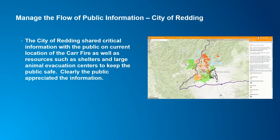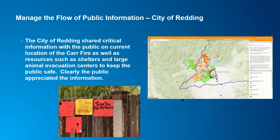One of my favorite examples from a public information perspective is from the city of Reading — from the Carr Fire a couple of weeks ago. It really represents a typical public information sharing pattern: sharing with the public where the fire is, where the evacuation zones are, and where resources like shelters and large animal evacuation shelters are. As the story goes, one day the GIS analyst at the city of Reading was driving to work and saw this scene in the community and took a picture. It's typical to see signs saying 'thank you, first responders' and 'thank you, firefighters' — but check this out: 'thank you, fire map updaters.' To me, what better validation from the public that the work you're doing matters and is really important, providing a critical source of information. A great and inspirational example to share.